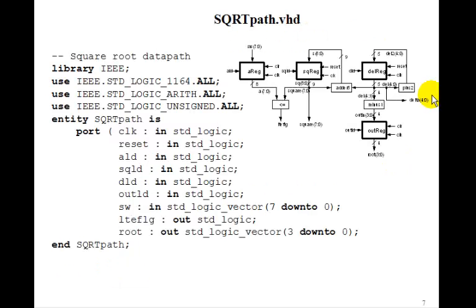So here was the datapath we had. We've got a clock coming in, reset in. We need load signals for the A register, the square root register. We'll have deload for the delta register and outload. These will be coming from the control unit. Switches will be in. We'll use the switches to provide the value that we want to take the square root of. And then the less than or equal flag will be the output of this less than or equal comparator. The less than or equal flag, of course, goes to the control unit. And the output root will be the answer.